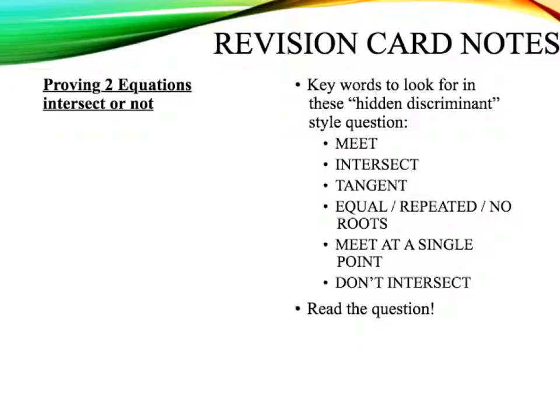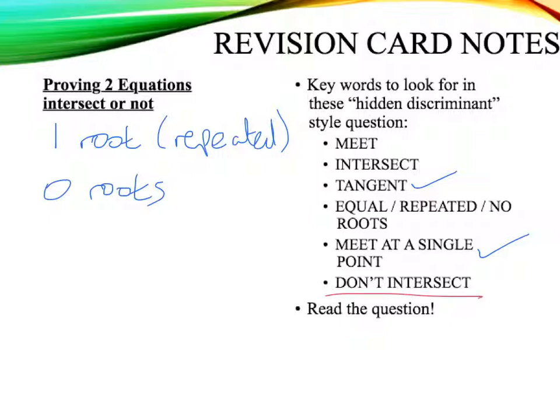Okay. You might not have spotted that this was a discriminant question, and if we're showing that two equations intersect or not, the sorts of things that you're going to be looking for in the question are whether they have one root, so maybe one kind of repeated root. It might say something like a tangent, for example. It might say that it meets at a single point. You might be looking for no roots or no intersections. In this case, that they don't intersect like the one we've just done. Or alternatively, you might see something that talks about meeting at two points.